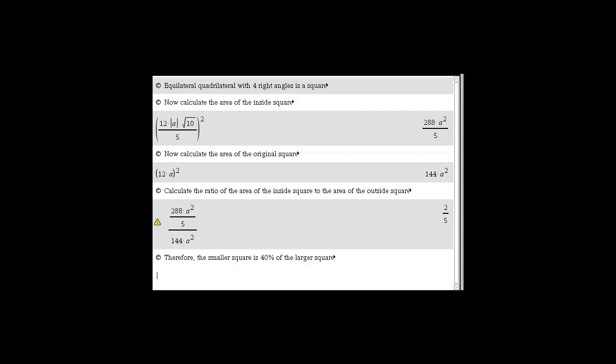So it turns out we have a square. Here's the area of the inside square, the area of the outside square. Take their ratios and you get 2 to 5, a bonafide proof using CAS to do the nasty stuff, but the student still had to do the logic, the thinking, the problem solving.